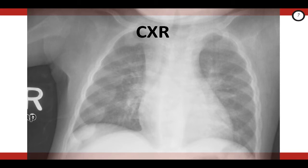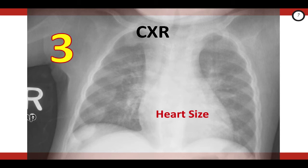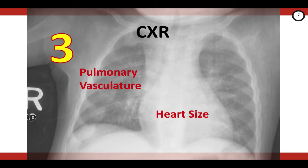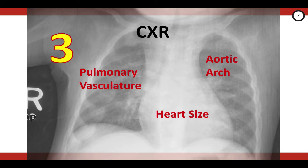Let's talk about the chest x-ray, and here we'll look at three things for a baby with suspected congenital heart disease. The first is heart size — a normal heart size is 50% or less of the width of the thorax on a PA view. Cardiomegaly may mean there's a shunting lesion. The second is the pulmonary vasculature: dark lung fields suggest a right obstructive lesion, while a whiteout is consistent with heart failure from a shunting or left obstructive lesion. The third is the aortic arch — in lesions like Tetralogy of Fallot and some Truncus malformations, the aortic arch is abnormally positioned on the right.